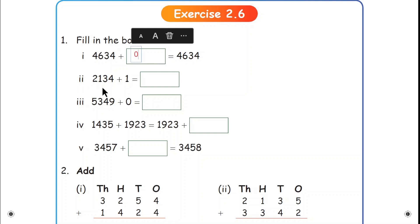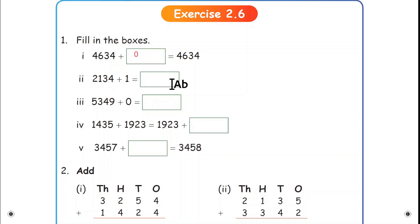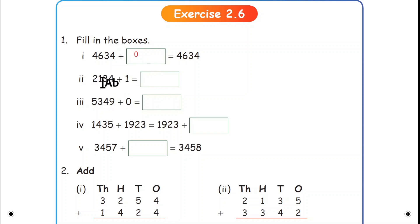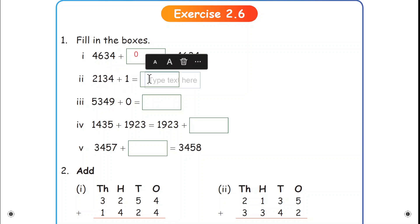Second one: 2134 plus 1 is equal to box. If we add 1 to any number, we can get the next number. So what is the next number? 2135.